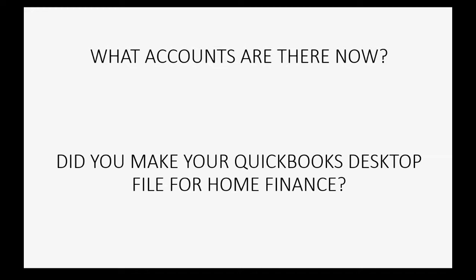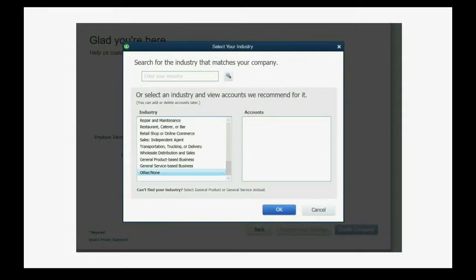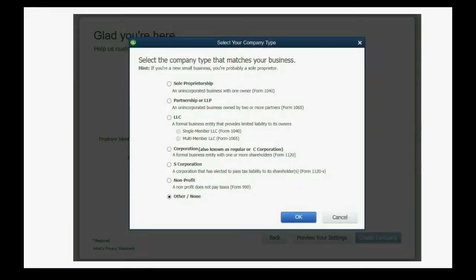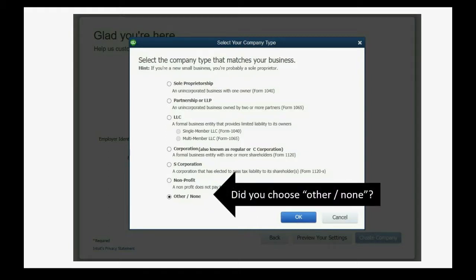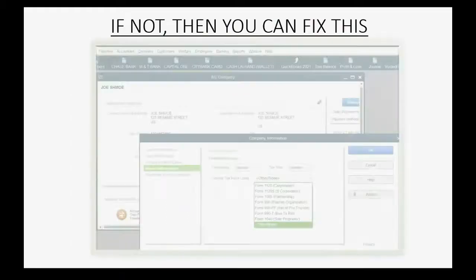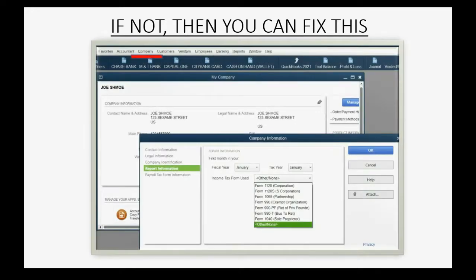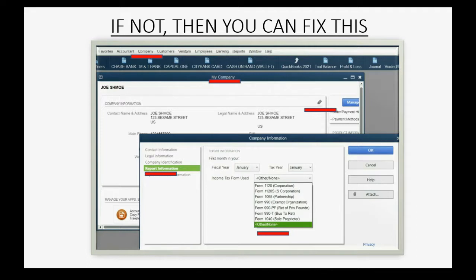If you were following the original videos in this series, to make the file for personal home finance you were instructed to choose 'other/none' when asked to select an industry, and also 'other/none' for company type. If you did that in both cases, you have the minimum amount of owner's equity accounts. If not, you would need to open the Company main menu, open the My Company window, click the pencil tool, click Report Information, and change it to 'other/none' to have the minimum number of equity accounts.